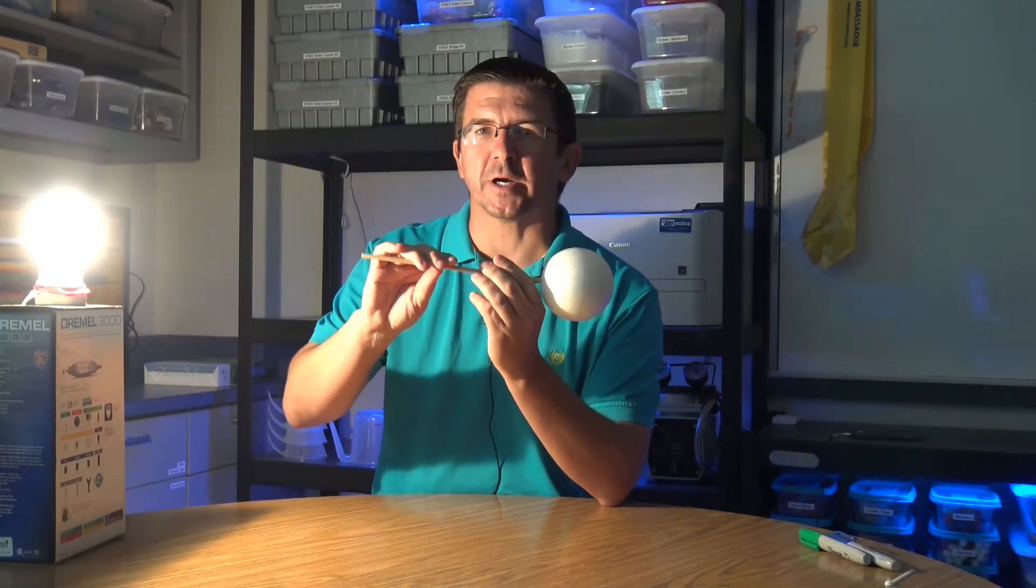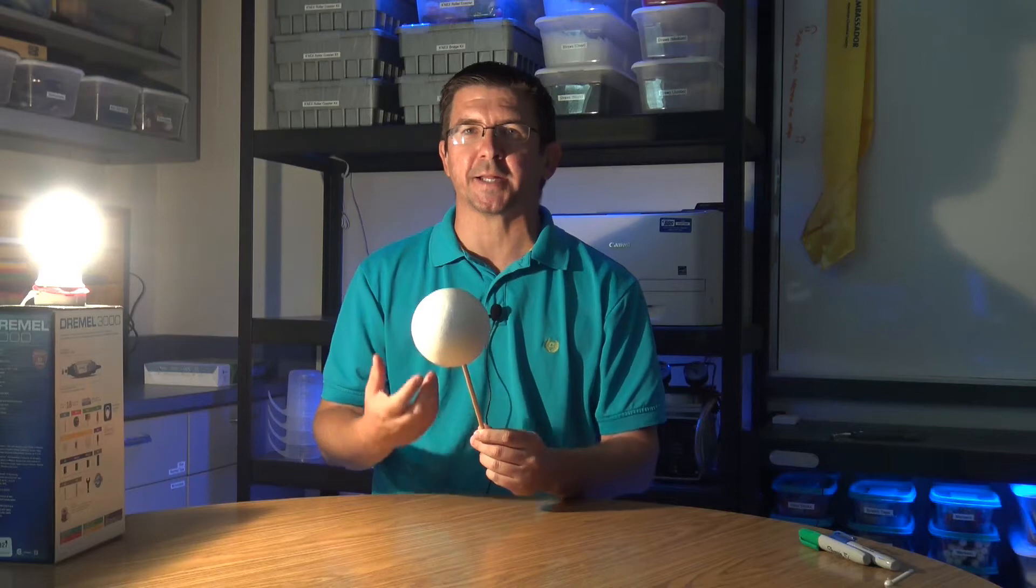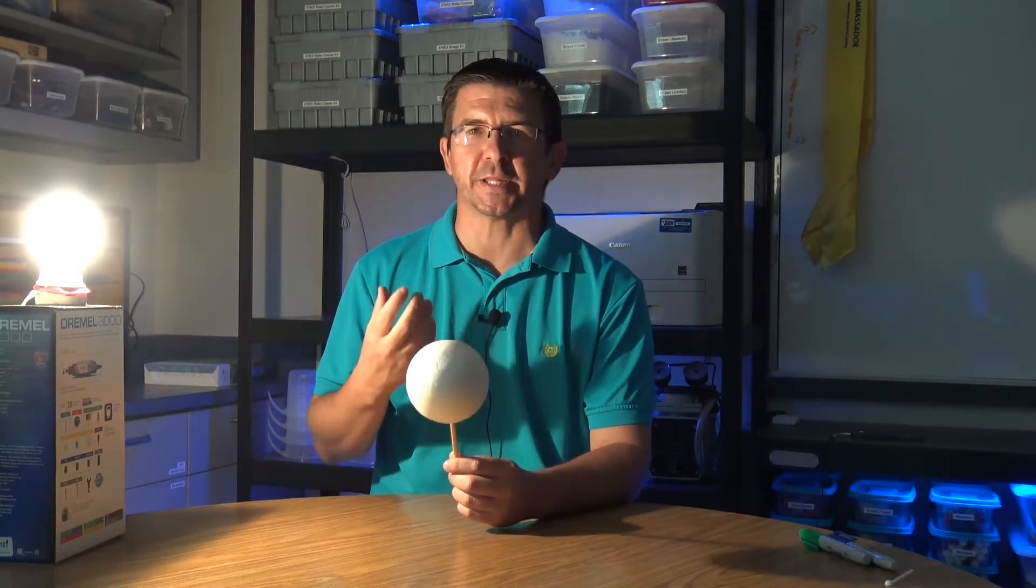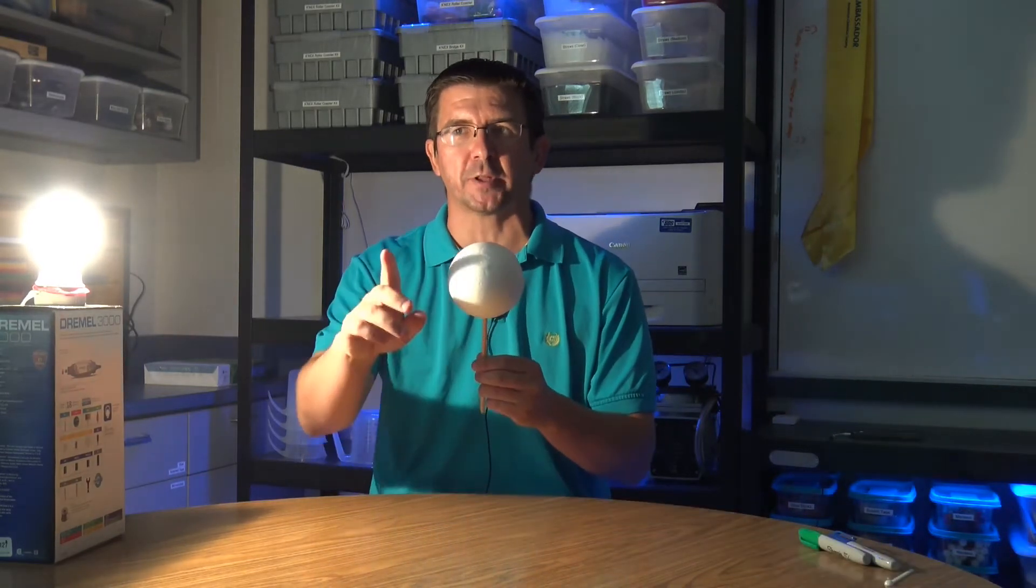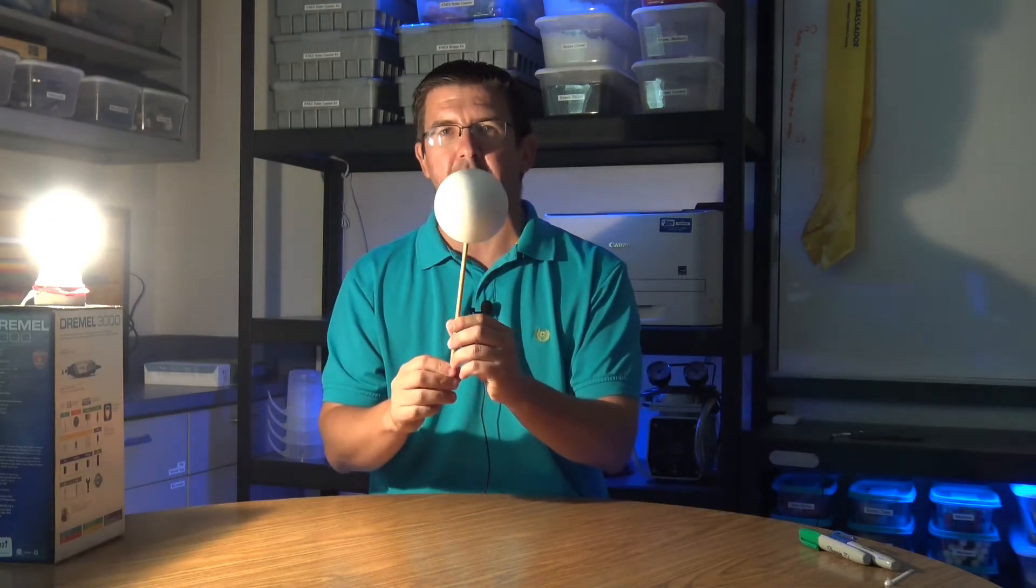And I've also got this piece of dowel rod here that stuck through the ball, and this is going to represent something very important. It's going to represent the axis of the Earth. And we said that the axis is just that imaginary line straight through the center of Earth that it's able to spin or rotate on.